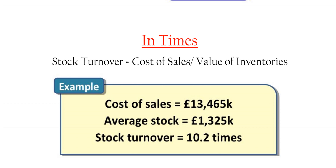The time period will be specified — it could be yearly, quarterly, it depends on the scenario. Now, is 10.2 times a good amount? That depends massively. You'll want something to compare it to — previous years or the industry average. Generally, the higher the better: the more times they turn over their stock, the more efficient they're being. That efficiency could reflect high sales or efficient stock management, such as lean production like just-in-time.